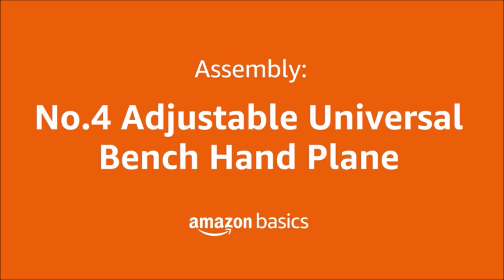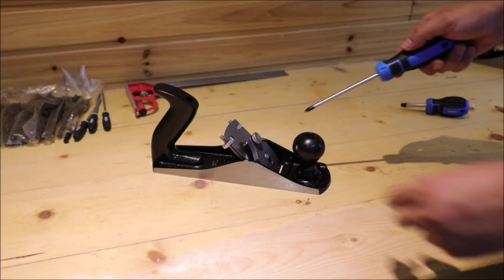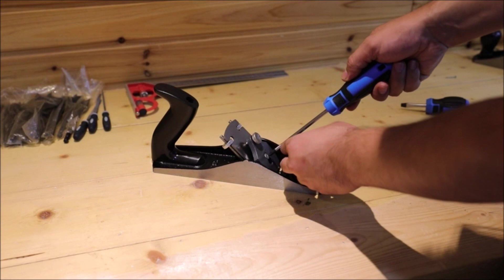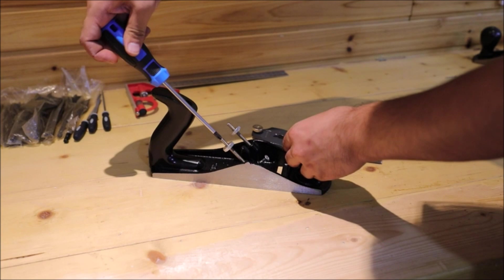Number one, Amazon Basics number four adjustable universal bench hand plane with two inch blade. It features durable cast iron body provides stability and strength, impact resistant plastic handle with contoured grip, durable steel alloy blade makes quality cuts, adjustable gear that allows you to achieve precise results.